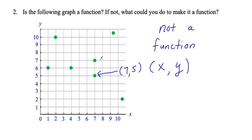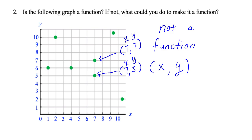So you could say: I could get rid of the point with coordinates 7, 7 or I could get rid of the point with coordinates 7, 5. By getting rid of one of those points, this whole thing would be a function. Remember, a coordinate is always (x, y) — these are called coordinates.